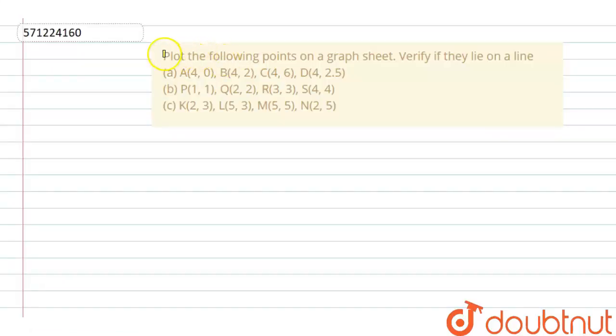Question is plot the following points on graph sheet. Verify if they lies on a line. There are three parts of this question. I am going to start from first part. So to start this question, firstly I am going to draw the axis. This is y-axis.